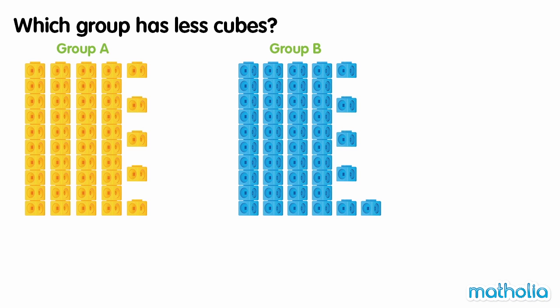Which group has less cubes? In group A, there are forty-five cubes. In group B, there are forty-six cubes. Let's compare the digits in the tens place. Both groups have four tens.